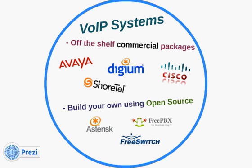Commercial VoIP options include Avaya, Digium, Cisco, Shortel, and Samsung — it's pushing out legacy systems because it's so flexible and inexpensive. You can also build your own using open source tools like Asterisk, a PBX engine, or FreeSwitch. Or you can get distributions like FreePBX, PBX in a Flash, or TrixBox. You don't need much computing power — you can use an old PC lying around to build a test system.